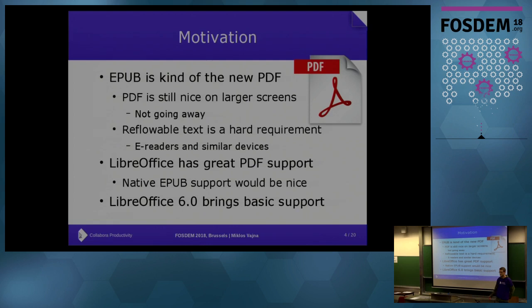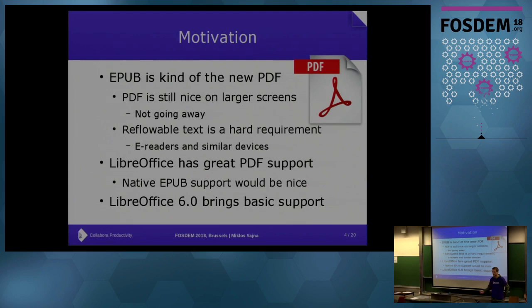PDF is not going away — it's still a very nice format when you have a larger screen — but it's not very good at reflowable text handling. So instead, what we have is EPUB, which is designed exactly for this use case. LibreOffice has pretty good PDF export. Wouldn't it be nice if it would also support exporting to EPUB directly as a native feature? Previously, you could export to some other format and then use a second tool to convert to EPUB, but the problem is that all of these are lossy conversions, so it's good to limit the number of building blocks you use. Directly exporting from LibreOffice itself has its own benefit.